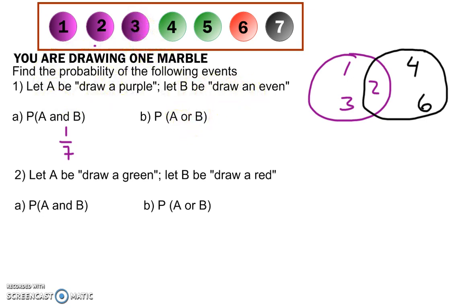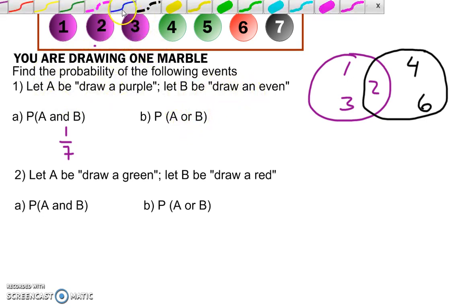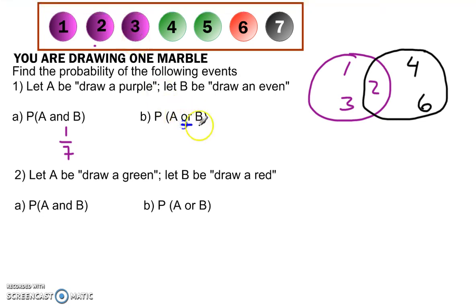Now if I want A or B, if it should be purple or even, then it's going to be one, two, three, four, or six. So it could be any of those five that fulfills that statement.